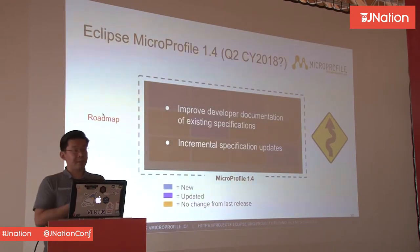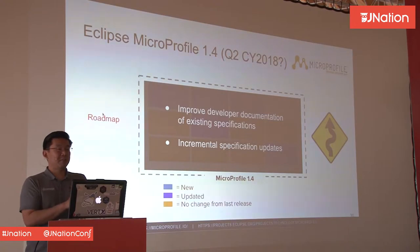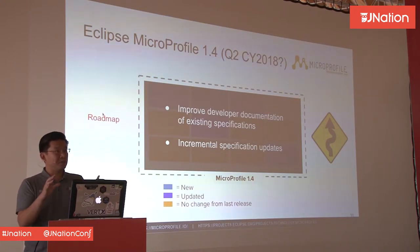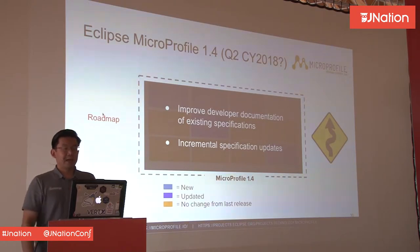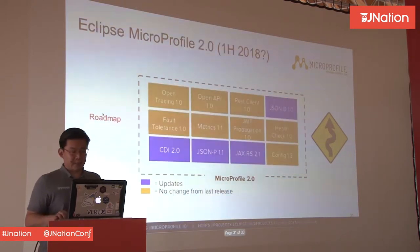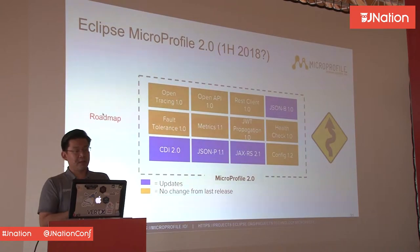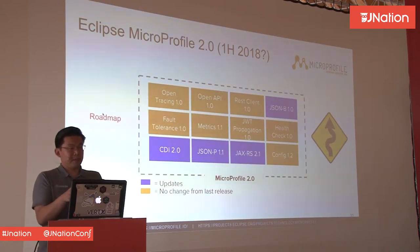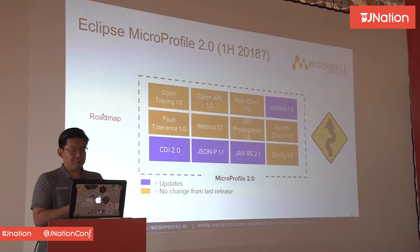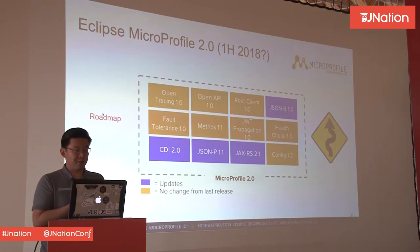We're expecting MicroProfile 1.4 — it was supposed to be released already — they're just improving the things already specified. And MicroProfile 2.0 maybe later this year, where they're going to add updated specifications from previous versions, like JSONB, CDI, and other minor stuff. So the core of the things are here.